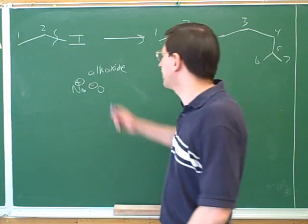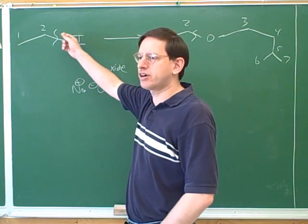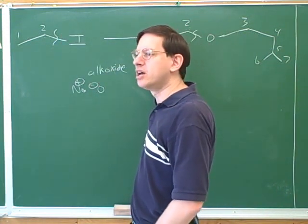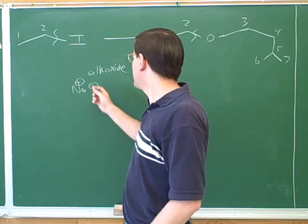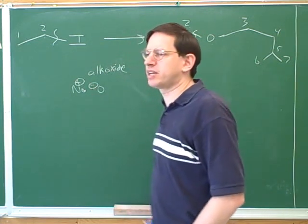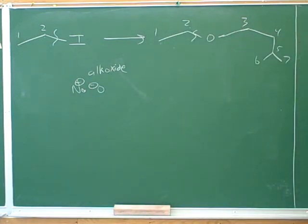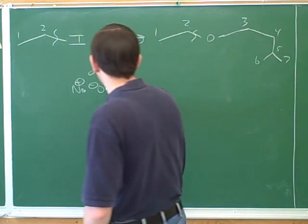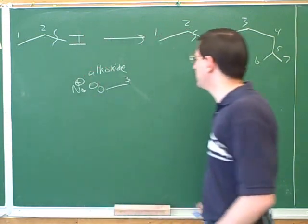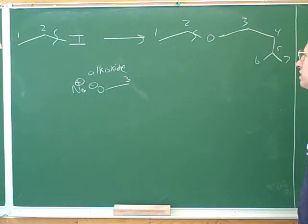Now, what we're trying to do is we're trying to figure out the alkoxide that we're going to add to the starting material to get this product. Well, in order to get this product, what atom do we want this oxygen to be connected to? Carbon. What number carbon? Number 3. Good.